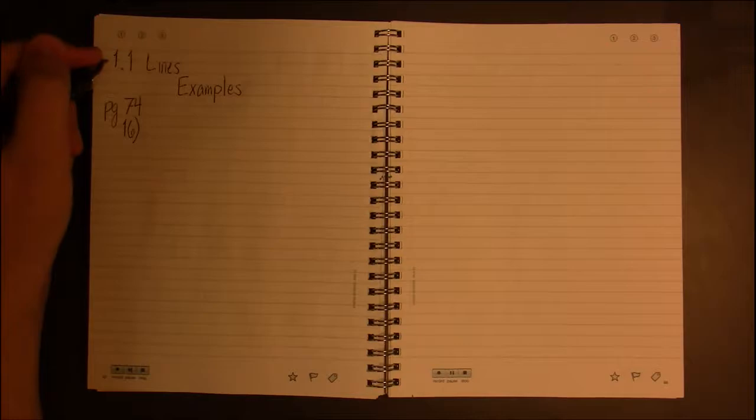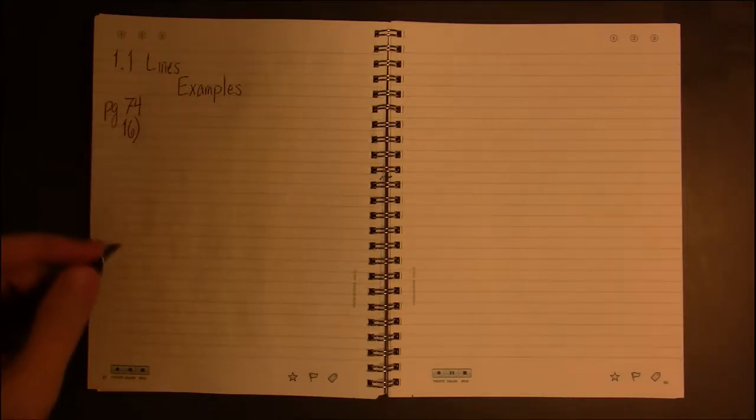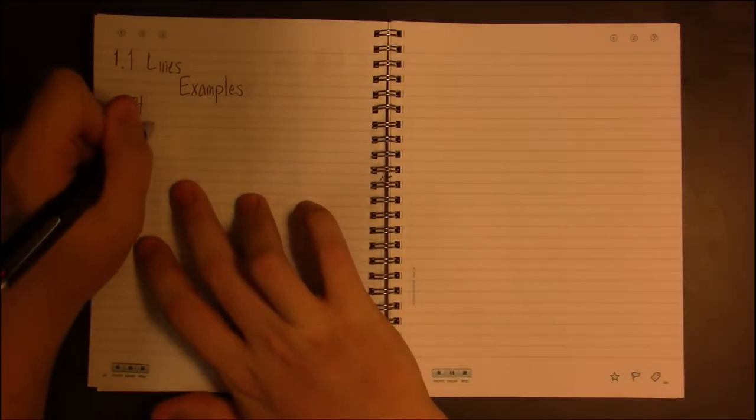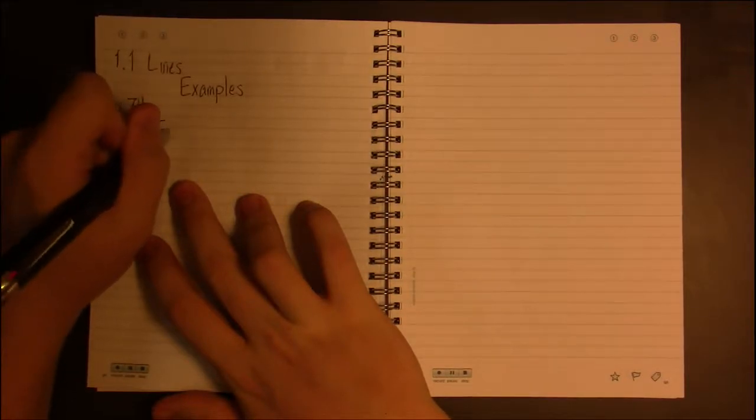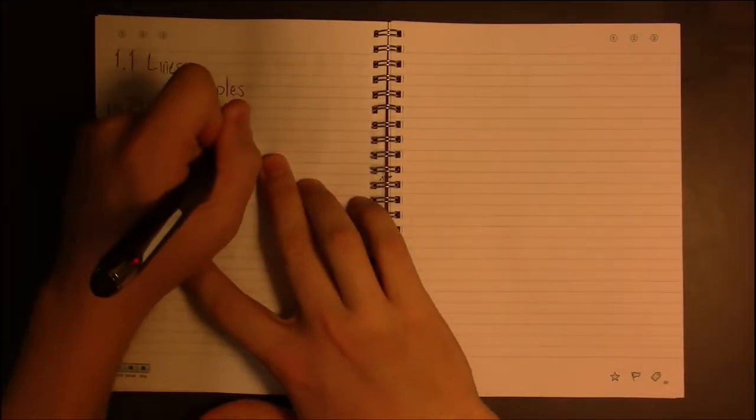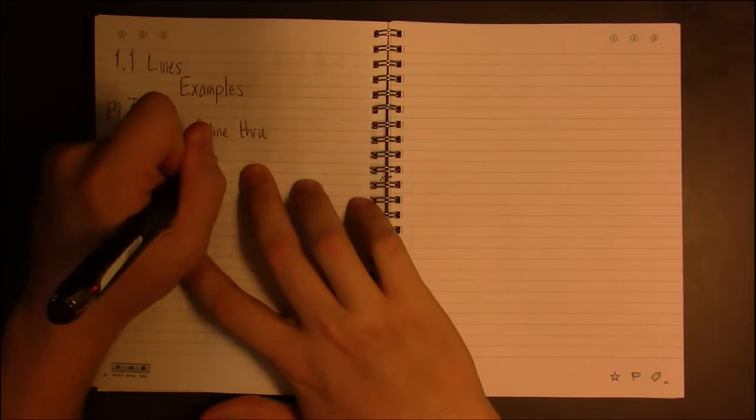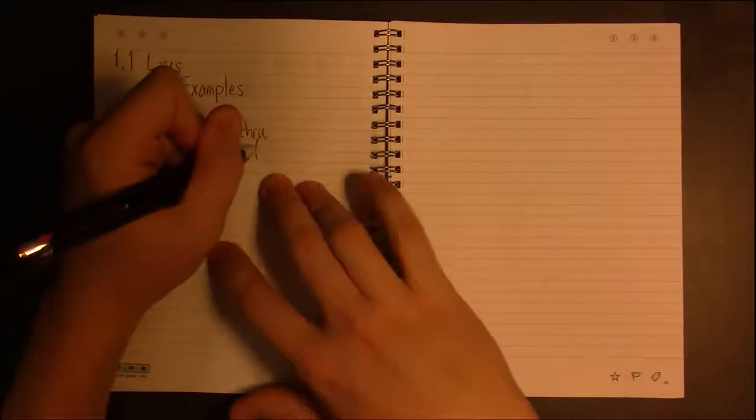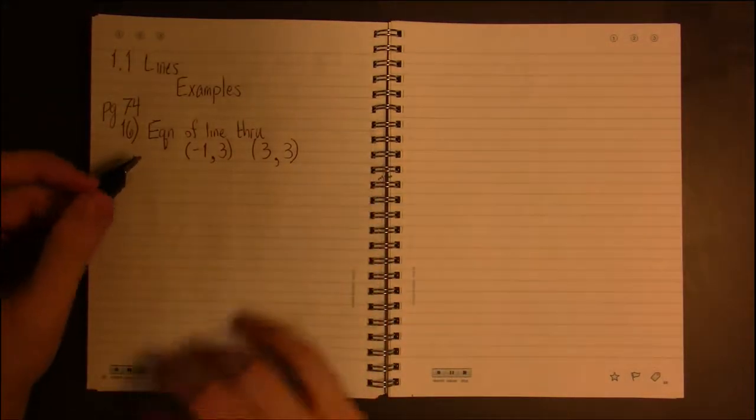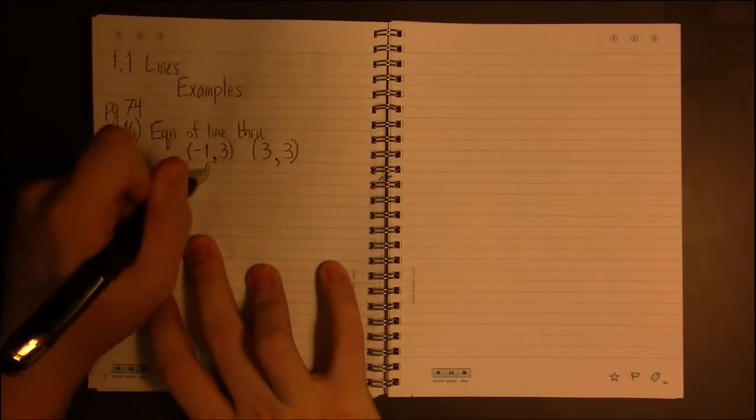Okay, let's go over some examples from section 1.1. I'm on page 74 of the textbook looking at problem 16. We want the equation of the line which passes through the following two points: the point (-1, 3) and the point (3, 3). So if we're given two points and our goal is to find the equation